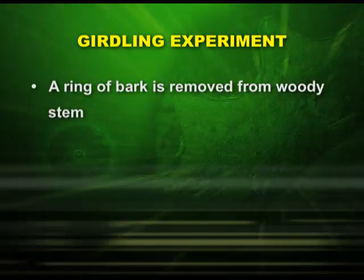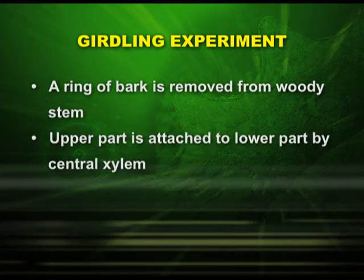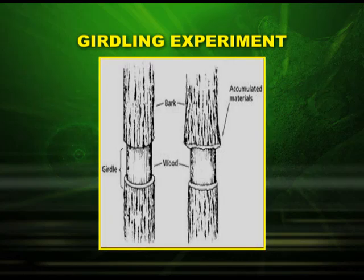You may wonder how phloem transports food — what is the experimental evidence? We have an experiment called the girdling experiment. A ring of bark is removed from a woody stem; the upper part remains attached to the lower part by the central xylem. In this girdling experiment, you observe the accumulation of food material just above the ring, and the roots die out. We conclude that the removal of phloem cuts off food supply to roots. The inference is that the transport of substances takes place through phloem.